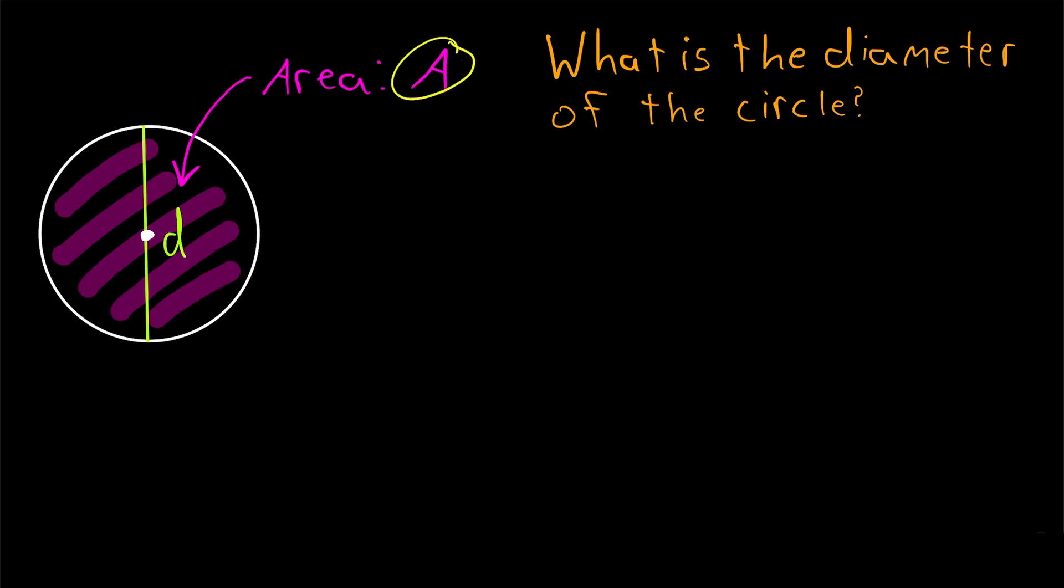We are given the area and we want to find the diameter of the circle. How do we do it? A good place to start is to ask yourself if you are already familiar with any formulas involving the area of a circle. An obvious one that might come to mind is the formula for the area of a circle in terms of the radius.